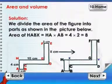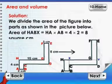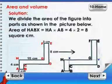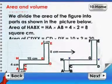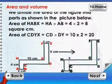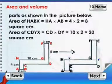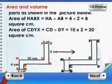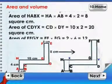Area of HABX is equal to HA into AB, which is equal to 4 into 2 or 8 square centimeters. Area of CDYX is equal to CD into DY,